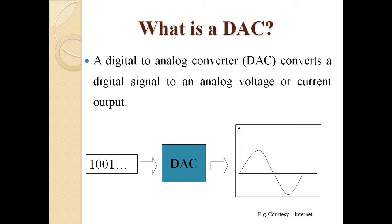A digital-to-analog converter, that is a DAC, converts a digital signal to an analog voltage or current output. A digital signal is a discrete form of signal and an analog signal is continuous with time. We need to convert an analog continuous signal to digital form for processing, and again in real life the signals coming out of a processor need to be analog signals.